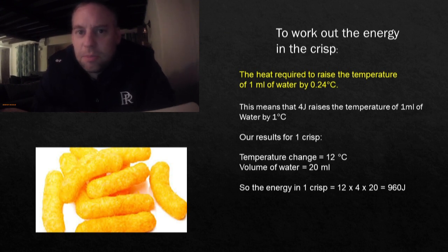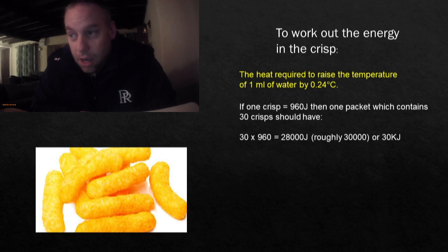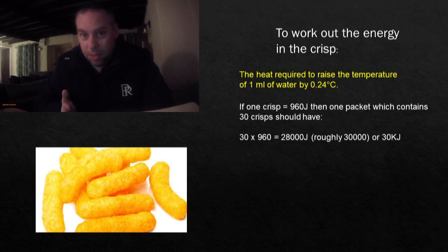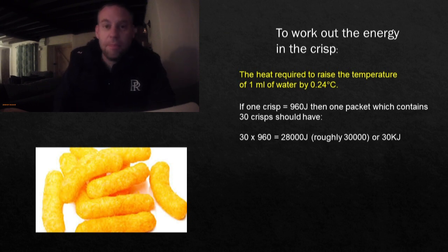Now a packet of crisps is more than one crisp. On average, Wotsits have about 30 crisps in each packet. So if I'm going to look at the energy in a whole packet of crisps, I need to times 30, the number of crisps, by the energy of one crisp, 960. Roughly we think there should be 30,000 joules or 30 kilojoules. Remember kilo means a thousand.